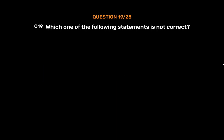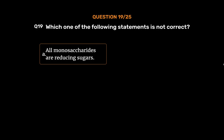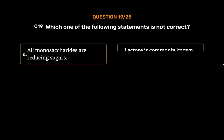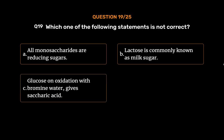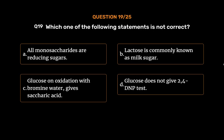Question number 19. Which one of the following statements is not correct? Option A, all monosaccharides are reducing sugars; Option B, lactose is commonly known as milk sugar; Option C, glucose on oxidation with bromine water gives saccharic acid; Option D, glucose does not give 2,4-DNP test. The correct answer is Option C: glucose on oxidation with bromine water gives saccharic acid.